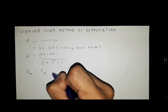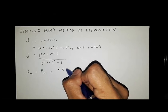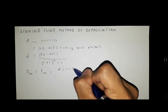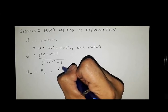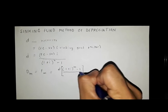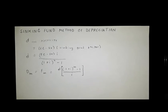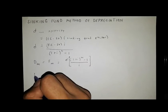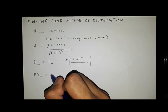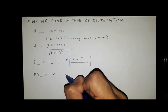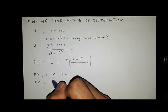The depreciation after M years, DM, is the future value after M years, equal to D times (1 plus I) raised to M minus 1, divided by I. Your book value after M years is equal to FC minus DM.